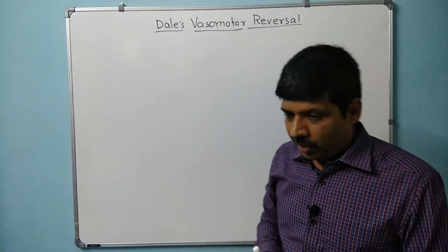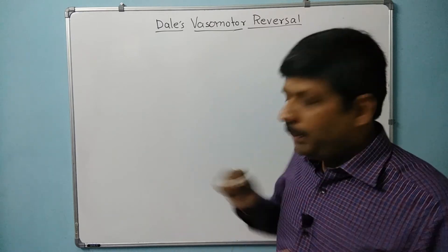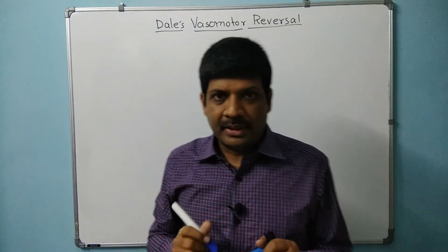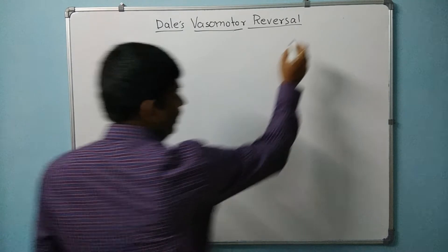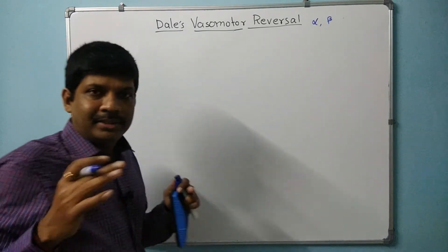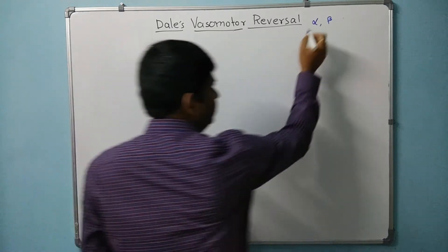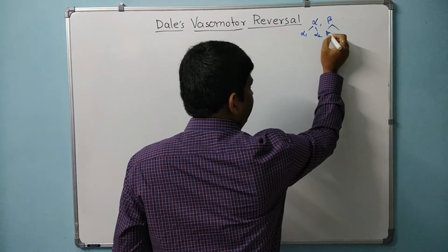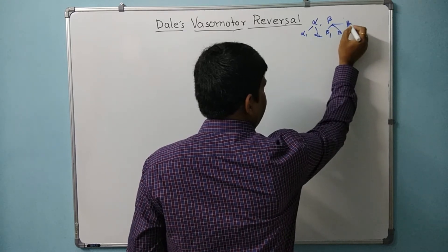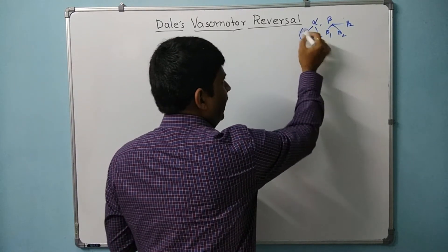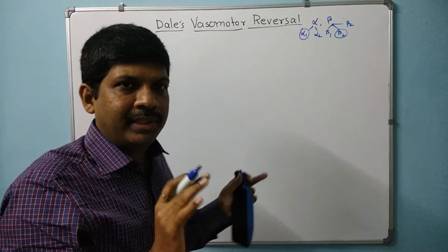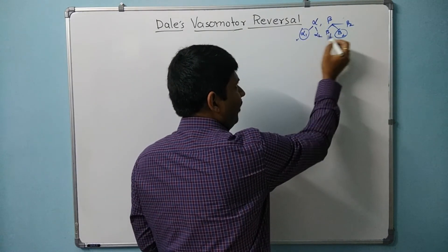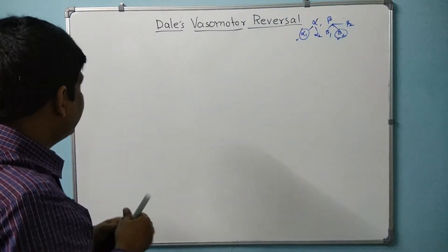I will explain the whole topic in detail. Before jumping deep into it, we should know about adrenoceptors and adrenergic drugs. The adrenoceptors we have are alpha adrenoceptors and beta adrenoceptors, with subtypes. We have alpha 1 and alpha 2, and for beta we have beta 1, beta 2, and beta 3. For this topic we will consider only alpha 1 and beta 2, as these are the receptors present in blood vessels.